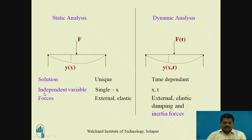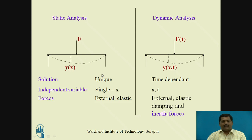The second point of differentiation is the independent variable. In static analysis, the independent variable is x, and deflection y depends on x, which is the distance from one end. In dynamic analysis, the independent variables are both x and t — distance and time (duration of vibration) — and both govern the deflection y.